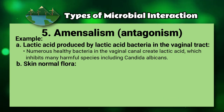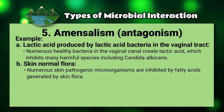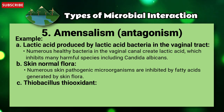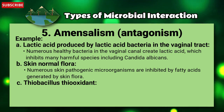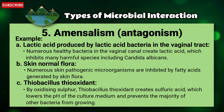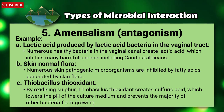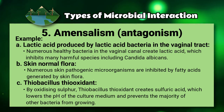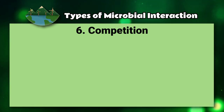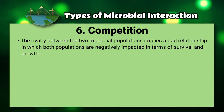Second, skin normal flora: numerous skin pathogenic microorganisms are inhibited by fatty acids generated by skin flora. Third, Thiobacillus thiooxidans: by oxidizing sulfur, Thiobacillus thiooxidans creates sulfuric acid, which lowers the pH of the culture medium and prevents the majority of other bacteria from growing.